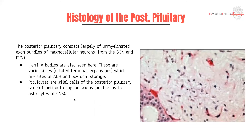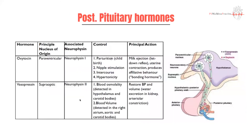The posterior pituitary consists of rich nervous tissue with a whole bunch of unmyelinated axons. It's important to know about structures called Herring bodies — these are dilated terminal expansions of the axons where ADH and oxytocin are stored, which are the two main hormones released by the posterior pituitary. ADH or vasopressin, and oxytocin — feel free to review those in your own time.